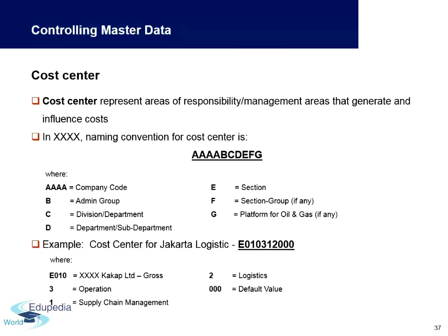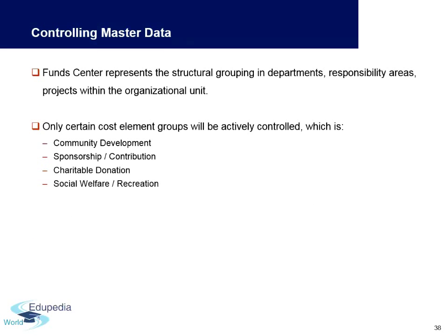There are naming conventions for cost centers that differ from company to company. For example, cost centers starting with 'A' may indicate a company code, 'B' for admin group, and so on. Some companies prefer purely numerical cost centers with no alphabets.